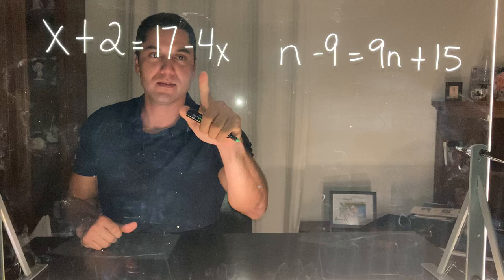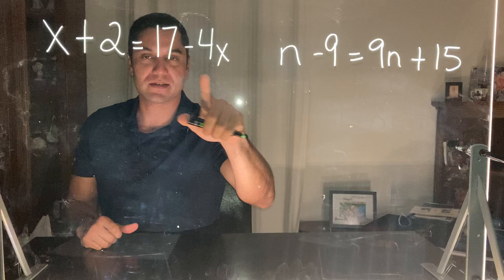Solve an equation when we have a variable on both sides. In this equation we have a positive x on the left hand side and a negative 4x on the right hand side.